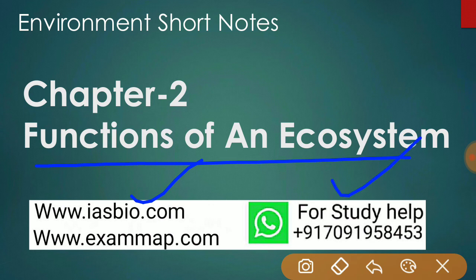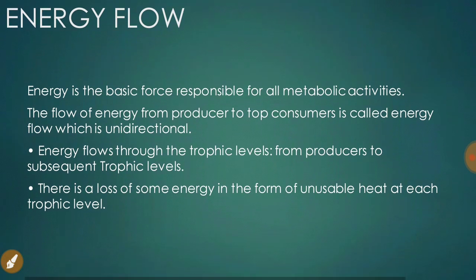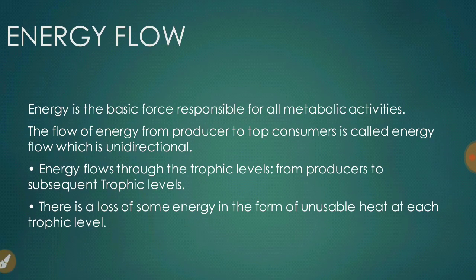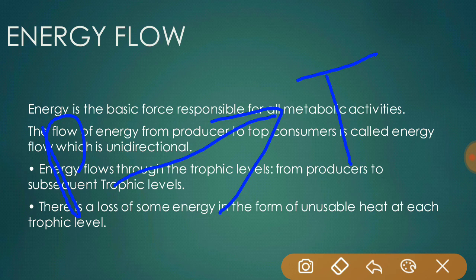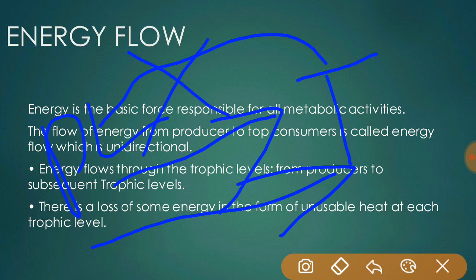You can also contact us on our WhatsApp number. Let's start. The first concept is energy flow. Energy is the basic force responsible for all metabolic activities. To do work we need energy, and energy comes from the food that we consume. The flow of energy from the producer to the top consumer is called energy flow, and it is unidirectional.